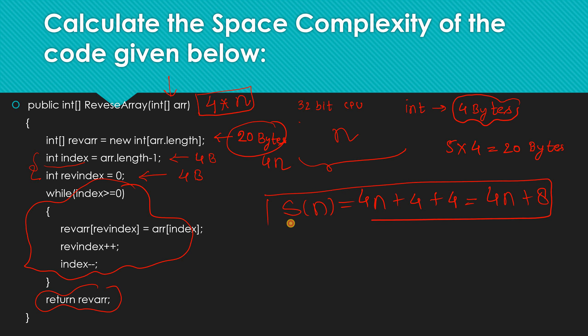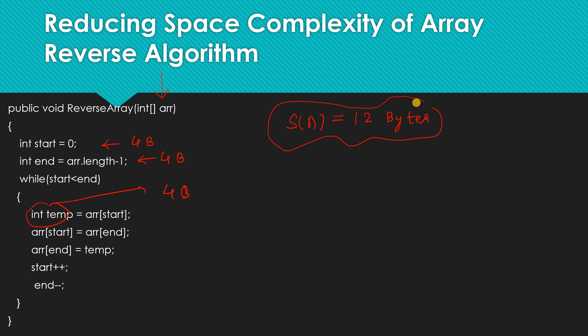For the optimized algorithm, we know declaring a variable needs 4 bytes. So we have 4 bytes for 'start', 4 bytes for 'end', and 4 bytes for 'temp'. Apart from these, there is nothing else. So the space complexity for this algorithm is 12 bytes. And if you see here, it is independent of the input length we are passing. We only need 12 bytes to run this program successfully.